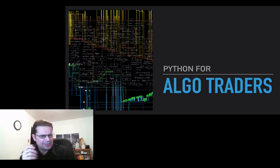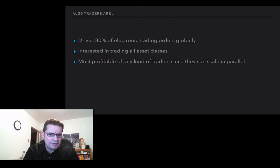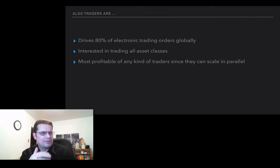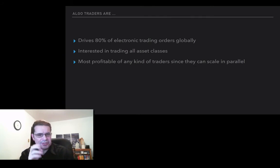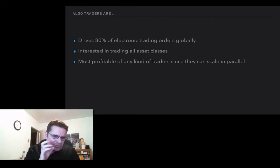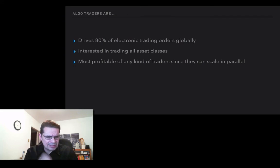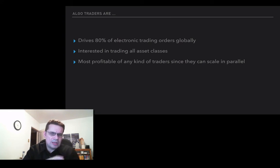The other big audience are algo traders and those thinking about using Python. Usually algo traders are the ones that are behind — 80% of all electronic trading, meaning all orders globally, are driven by algorithmic trading. Those in this category are pretty well interested in learning all asset classes. The ones that are most profitable can scale in parallel in a way that no human can ever do.